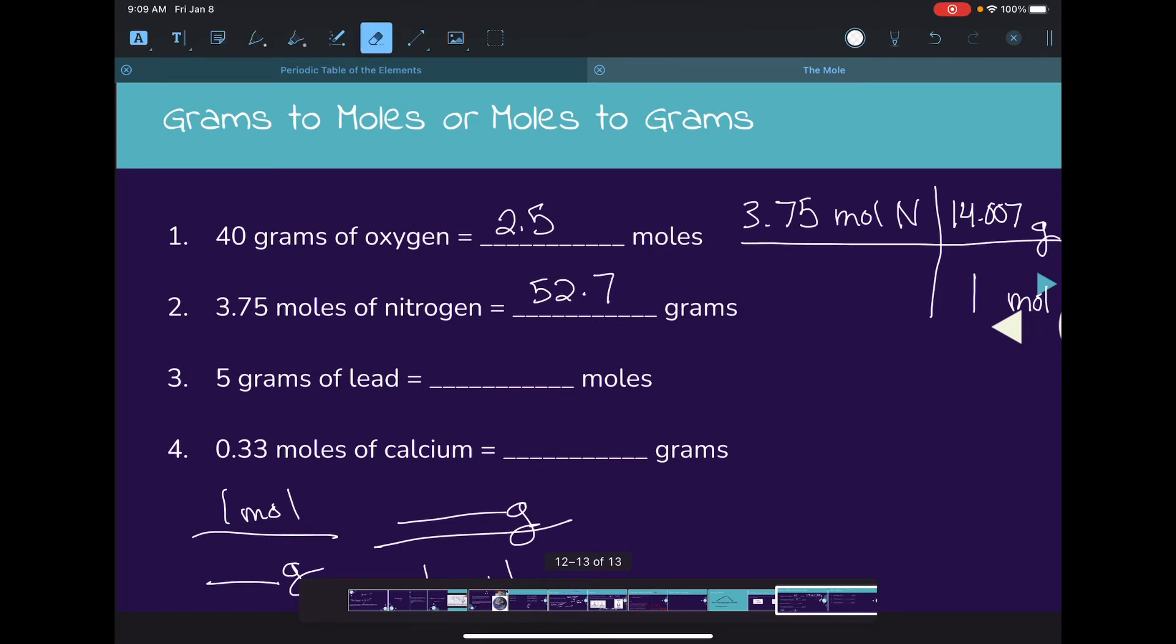Next, we'll do lead. We have 5 grams of lead, which has the symbol Pb, and we need to convert to moles. Grams go on the bottom, one mole on the top. Finding lead on the periodic table, the molar mass is 207.2. Multiplying across the top and dividing across the bottom, our answer is 0.02 moles.